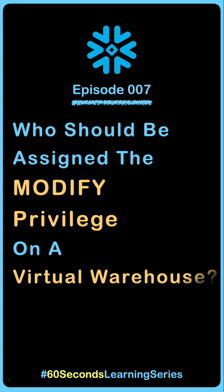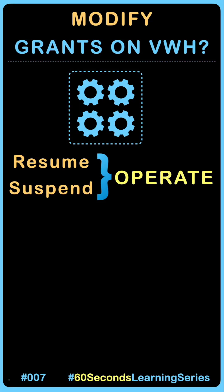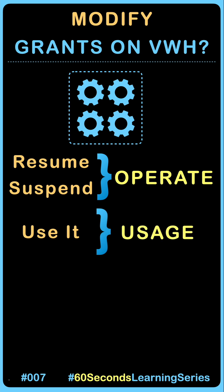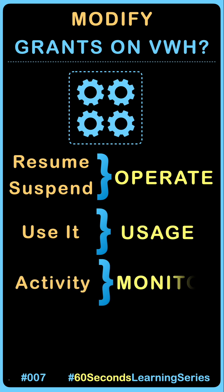Let's understand who should be assigned the modify privileges on a virtual warehouse and why. The Operate grant allows a role to resume and suspend a warehouse. The Usage grant allows a role to use a warehouse to run queries. The Monitor grant allows a role to track the warehouse activity.